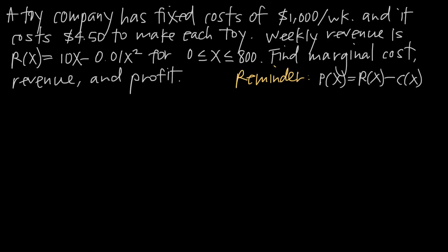This will become a little bit more clear as we go through it. In this particular problem, we've been told that a toy company has fixed costs of $1,000 per week. Fixed costs are costs that don't change — no matter how many units they make, whether zero or 10,000, fixed costs are always $1,000. That could be rent on their warehouse or manufacturing facility. It costs them $4.50 to make each toy. We've also been given the weekly revenue function: R(x) = 10x − 0.01x², which applies when the company makes between 0 and 800 units.